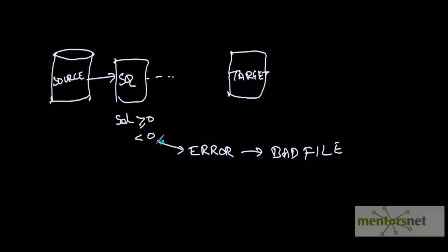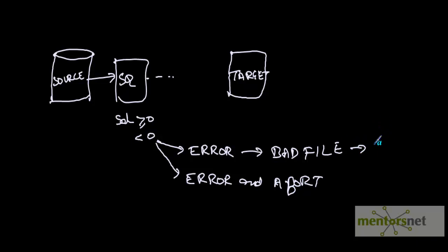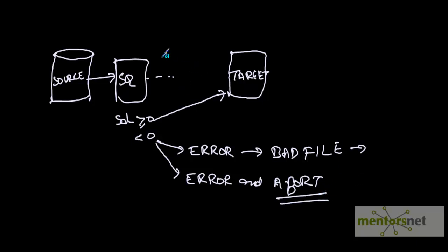Or, I want to mark these as error records and abort the whole session. In this case all good records I want to load to the target, so all these records will go to the target. But in the other case, everything will get aborted the moment the first record with negative salary comes in - the whole session gets aborted and not even good records will go to the target table. That is the use of the abort function in expression transformation.